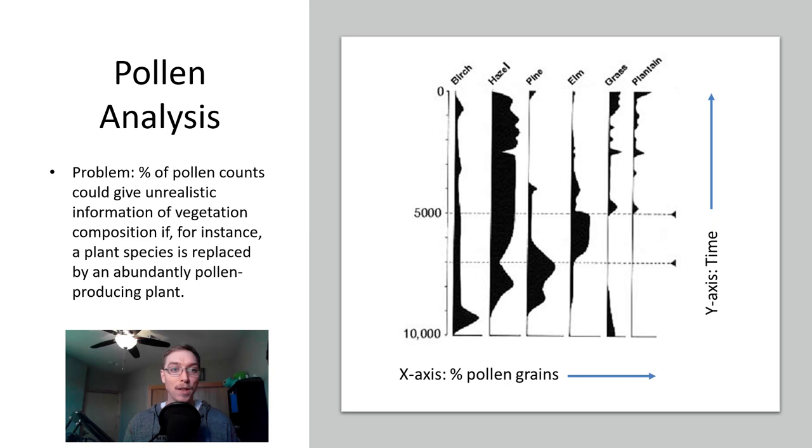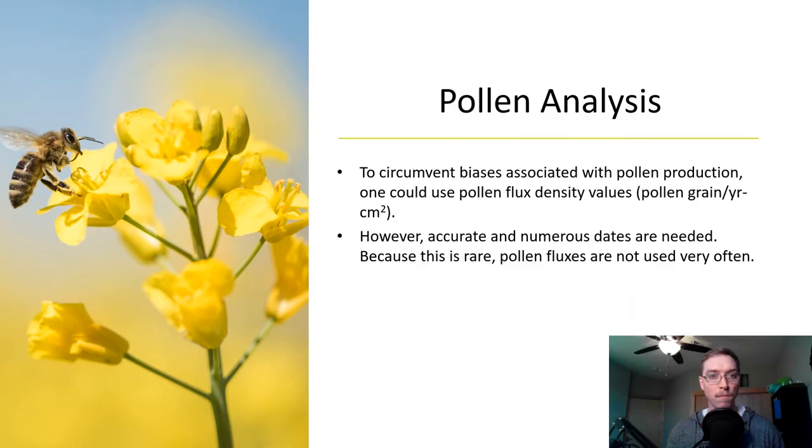Problem: the percentage of pollen counts can give unrealistic information of vegetation composition if a plant species is replaced by an abundantly pollen producing plant. If you have for example a hazel tree or a pine tree moving in that can kind of flood the system. In some cases to circumvent biases associated with pollen production one could use pollen flux density values or pollen grains per year per centimeter squared. However accurate and numerous dates are needed. Because this is rare, pollen fluxes are not very often used.